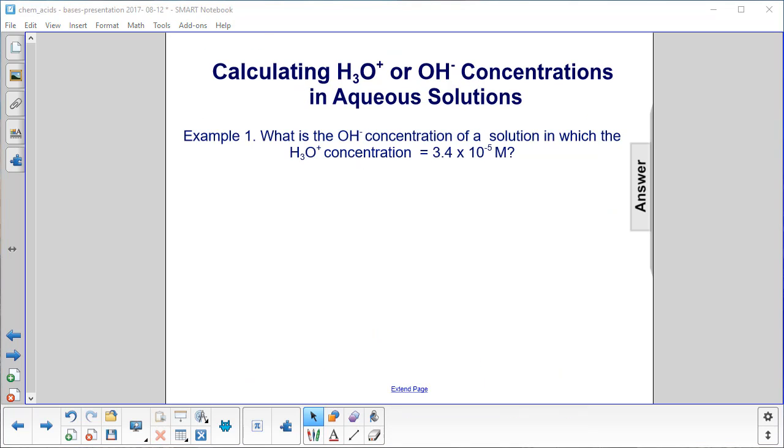Here's an example for you to try. What is the hydroxide concentration of a solution in which the hydronium concentration is 3.4 times 10 to the minus 5th molar? Go ahead and work that out and come back when you're ready. Pause the video if necessary, and we'll pull out the answer tab.